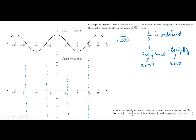When you take 1 divided by 1, that just equals 1. So wherever the cosine of x equals 1, we can put the same point on the secant — that happens at 0, at ±2π. And 1 divided by -1 is -1, so when cosine is -1 at ±π, the secant is -1 there too. So we've got these solid known points on the secant graph.